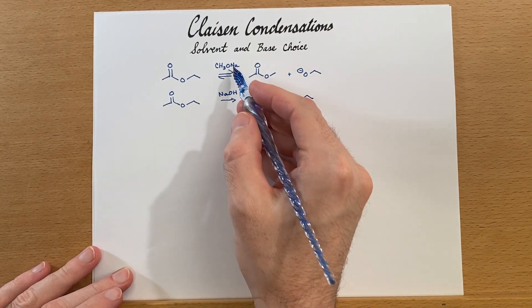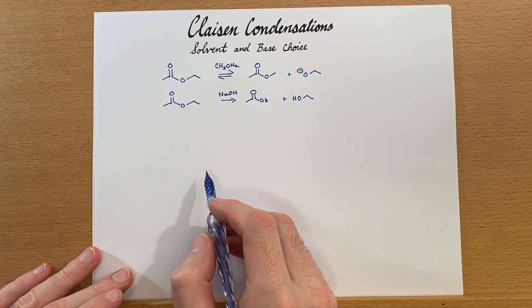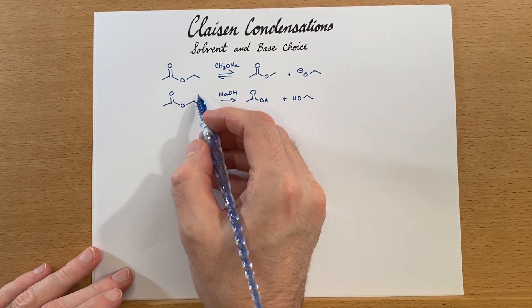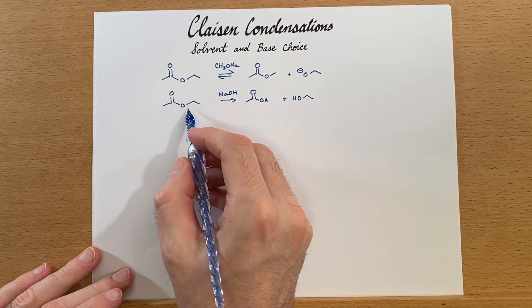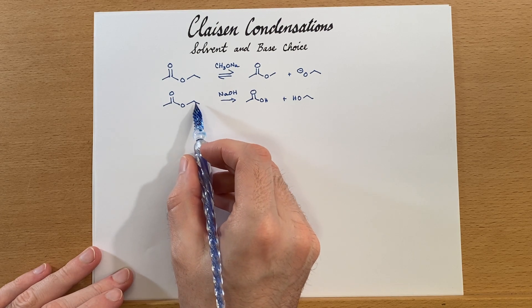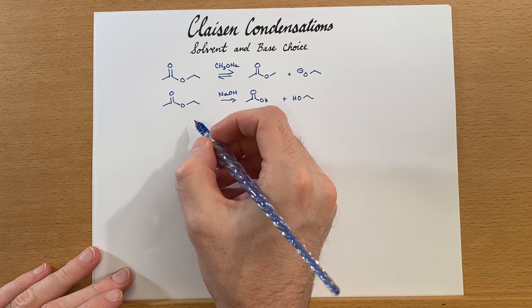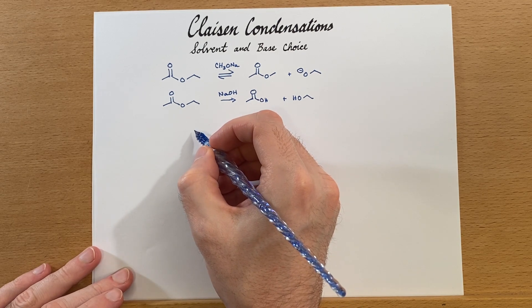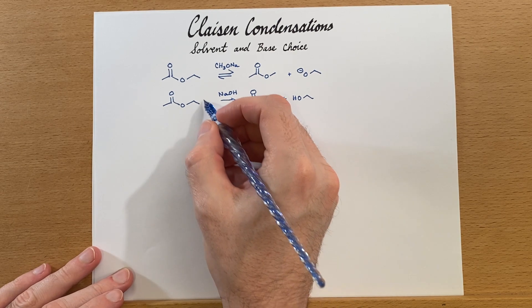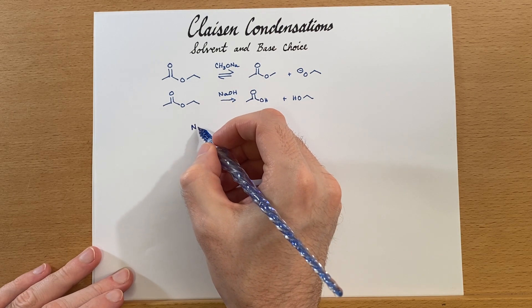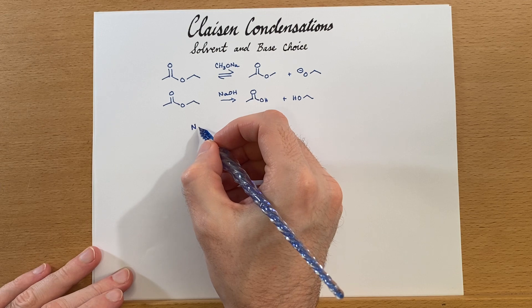Either of these should be avoided. Instead, what we should use for this particular ester is a base that corresponds to this alkyl group. We should use sodium ethoxide because this is an ethyl group, and we should also use ethanol as our solvent.